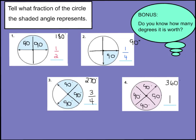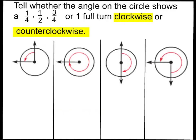It is rotated 360 degrees for a full circle. I hope you got those four right. Let's go to some more practice. This last slide before your homework: tell whether the angle of the circle shows a one-fourth, one-half, three-fourths, or one full turn, clockwise or counterclockwise. If you're going in the direction of a clock, it's clockwise; going left is counterclockwise. Also tell how many degrees it turned. Go ahead and pause the video and write your answers to these four questions.